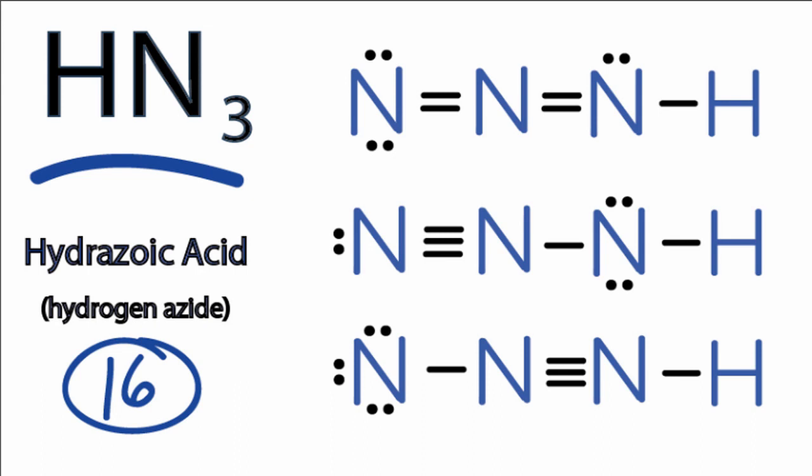So the question is which one of these is the most appropriate Lewis structure for HN3? One way to determine that is to look at the formal charges for each atom.